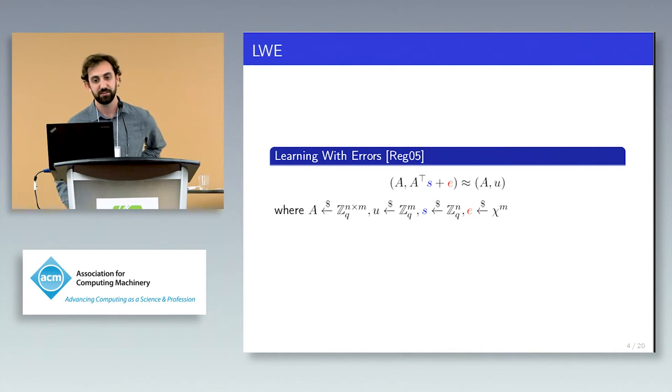The parameters of the learning with errors assumption are three integers: the modulus Q, and two integers N and M, which will be the dimensions of the matrices. Typically, N is considered the security parameter, and Q and M are then functions of N. How the assumption works is I first sample a uniformly random matrix A, along with a secret vector of length N, S, shown here in blue, and an error vector of length M, shown here in red. This error vector is usually sampled from a discrete Gaussian.